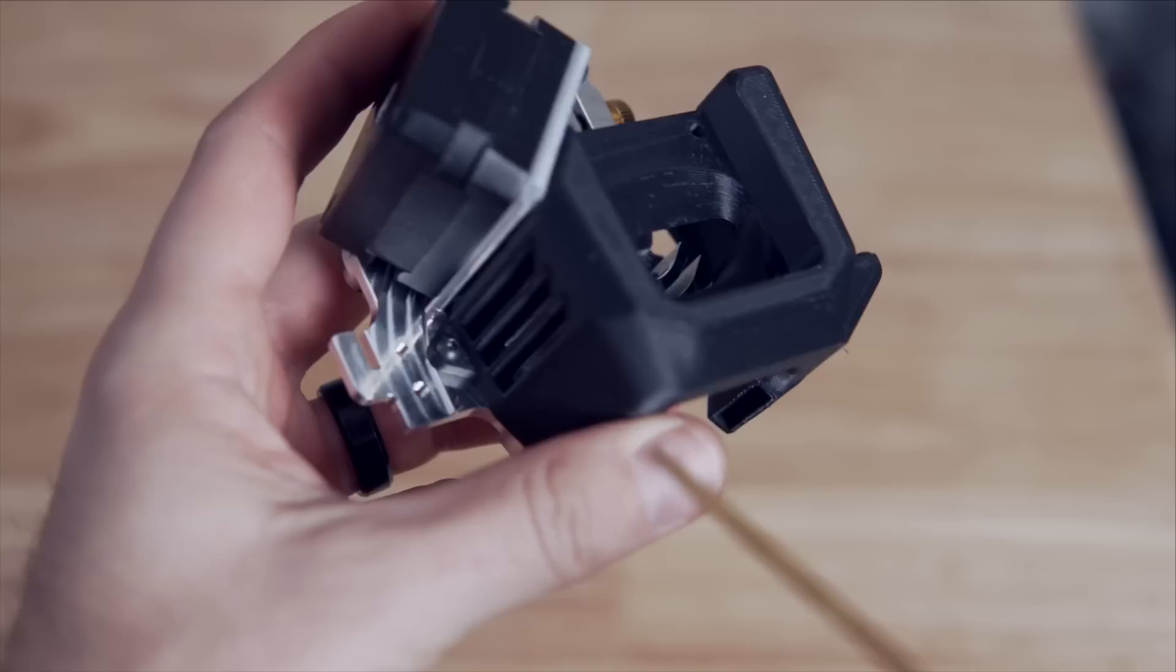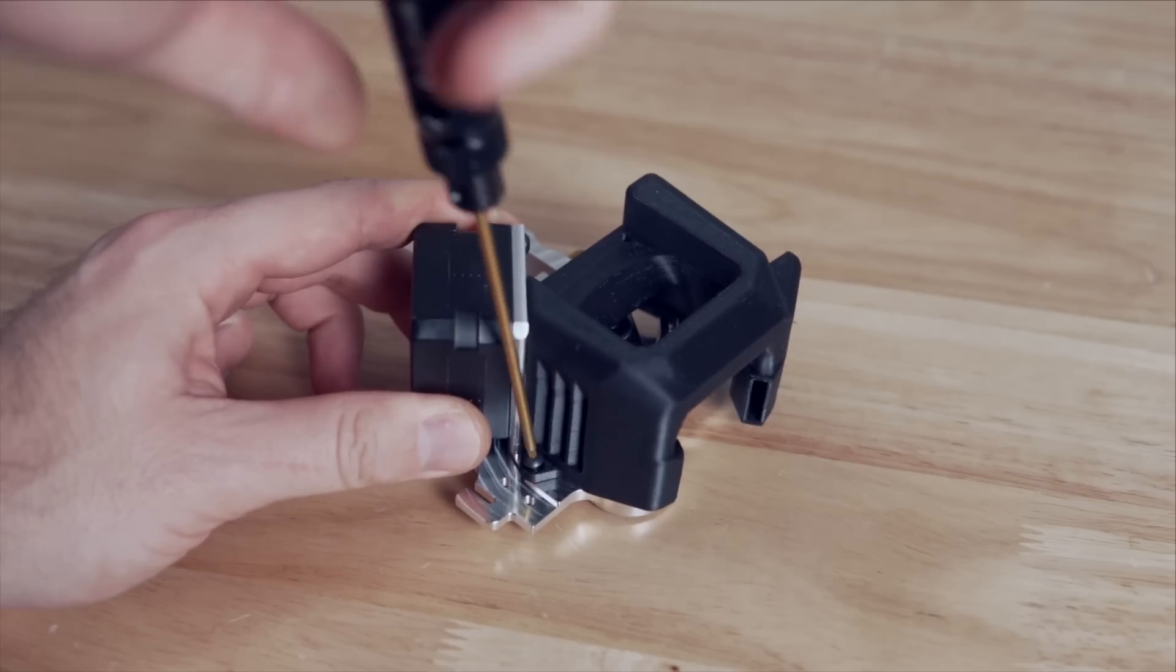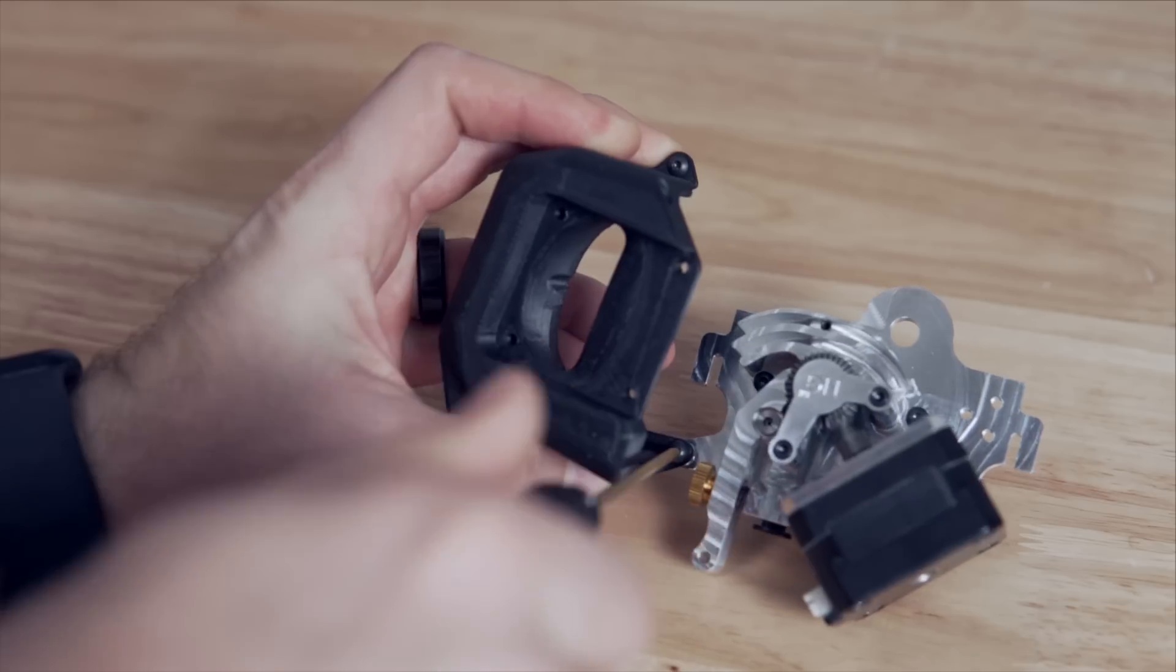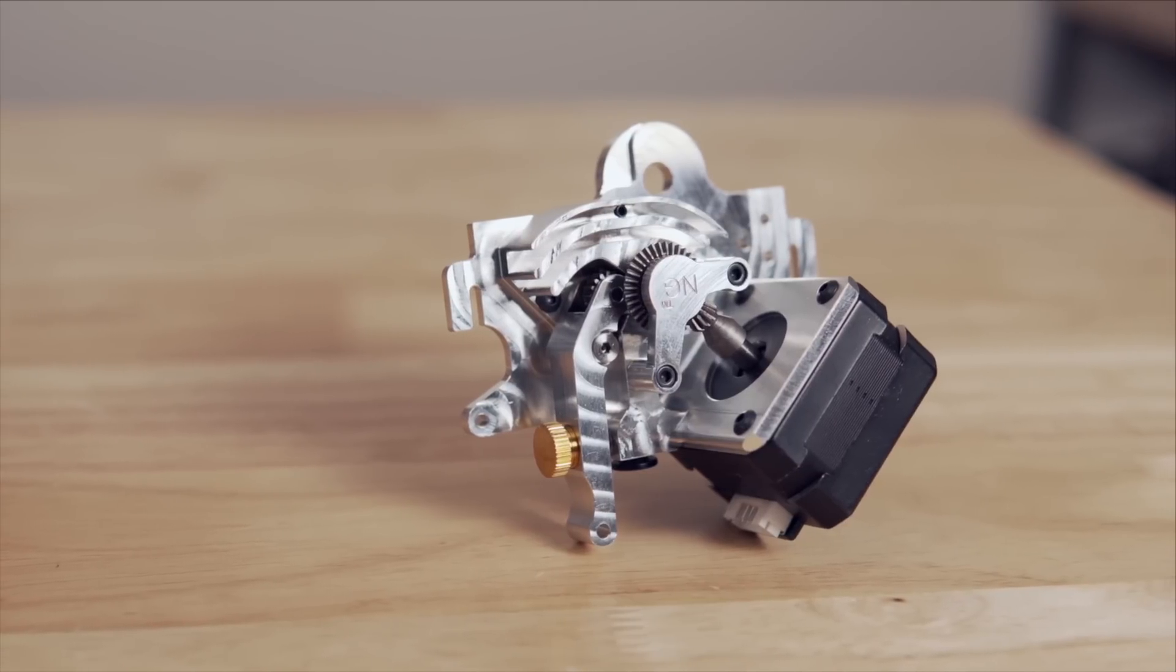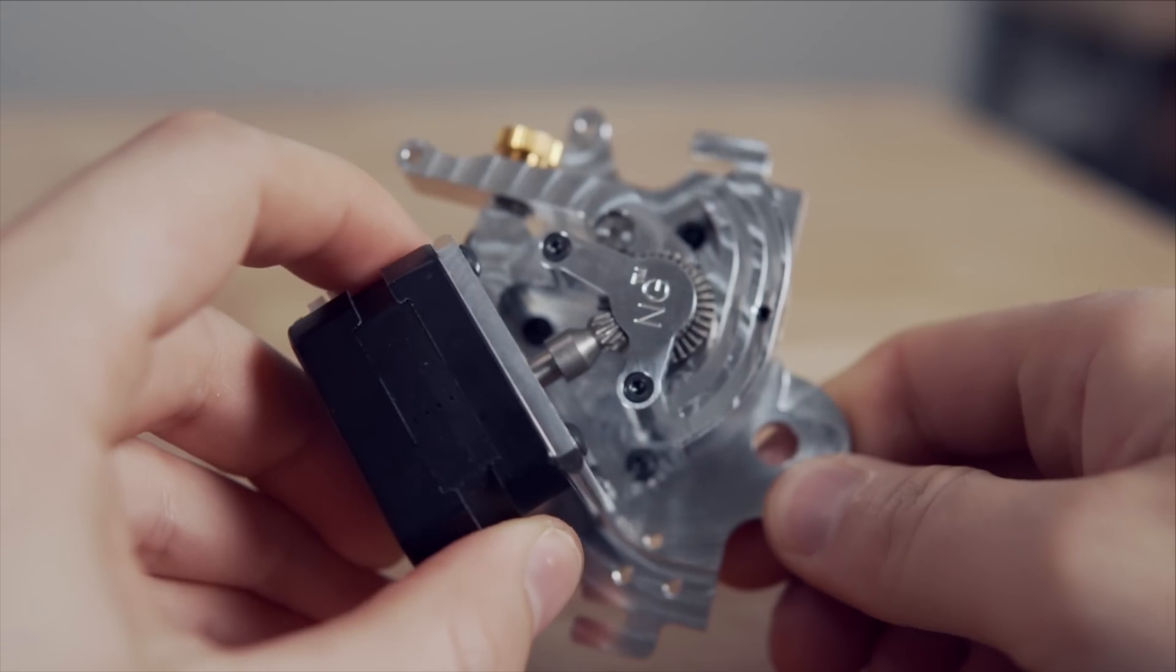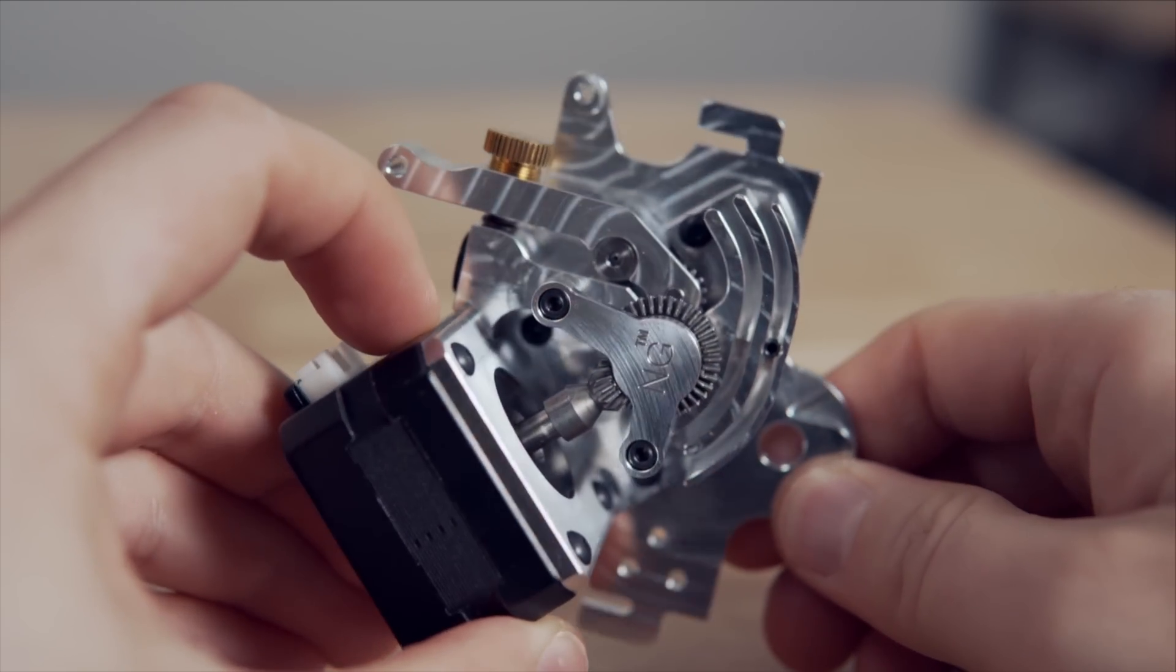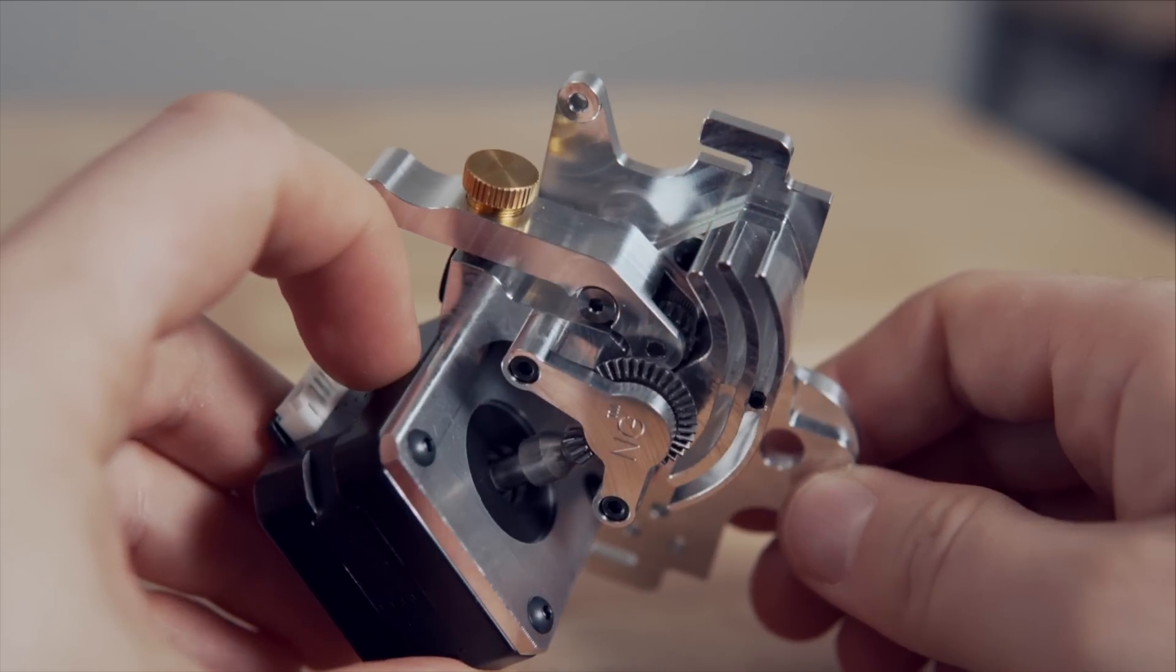Now we need to grab the main body of the NG extruder and to remove the pre-installed fan shroud. This is just held in place by two screws, one on the top right and one on the left-hand side. At this point, I take a minute to appreciate both the machining of the aluminum body as well as the gearing. This entire extruder is going to be covered up with fans and we won't be able to see this really ever again. So I always take a moment and just kind of look it over.